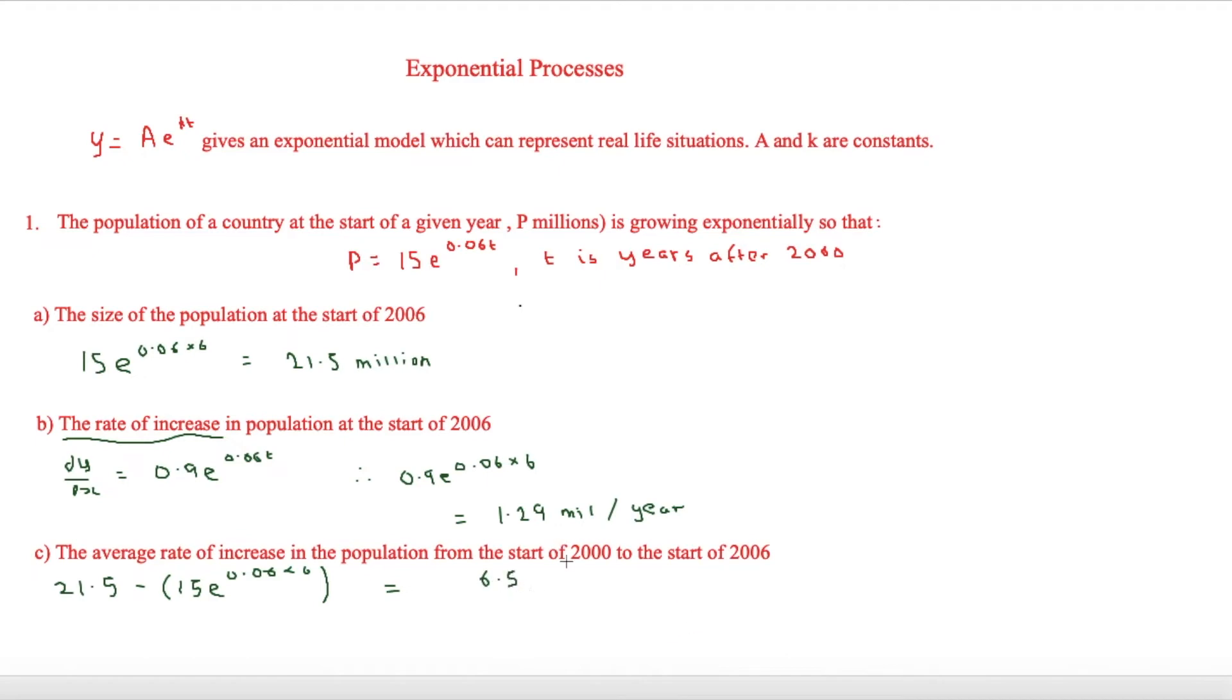But we're not finished yet, because there's six years in between and it's asking for the average rate, we're going to divide everything by six. So this will be divided by six, and that will therefore be equal to 1.08 million.